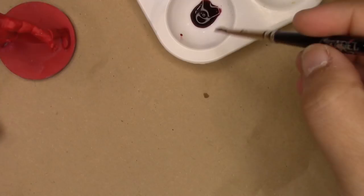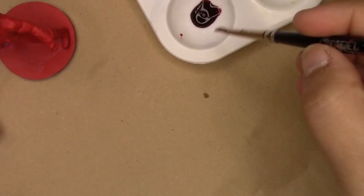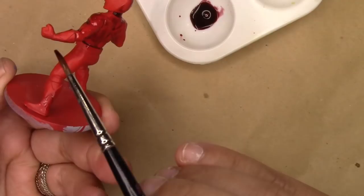Now that the base coats are on, we're going to give the models some depth. As miniature painters, we paint the illusion of light onto the miniatures using various techniques. This process is pretty straightforward for the Red and Blue Ranger.